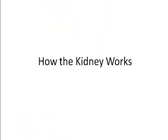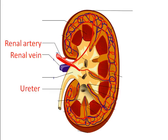How the kidney works. Blood is delivered to the kidney for filtration by the renal artery. Blood leaves the kidney through the renal vein.